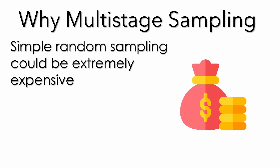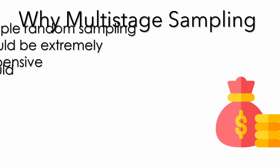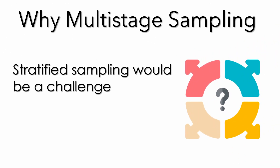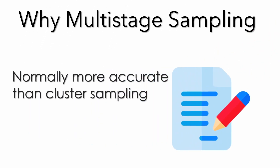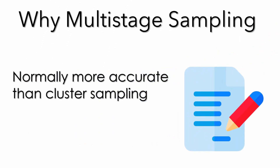A reason to choose multi-stage sampling is that SRS is often far more expensive. And often it is really difficult to distinguish subgroups, so stratified sampling wouldn't be a good idea either. Last but not least, multi-stage sampling is more accurate than cluster sampling alone.